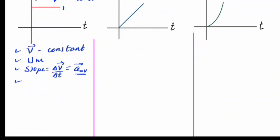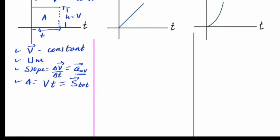The area under the v-t graph is calculated by bounding the region. For a rectangular region, the area is base times height — base is time and height is velocity. Velocity times time gives displacement. So the area under the velocity versus time graph gives total displacement. Unlike the displacement versus time graph, the area here gives us a meaningful quantity describing motion — that is displacement. The slope of the v-t graph equals the average acceleration.